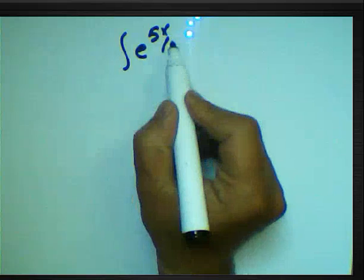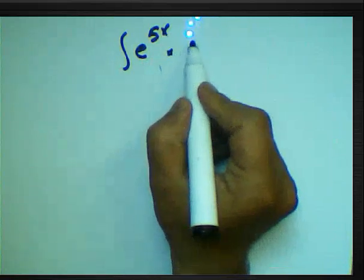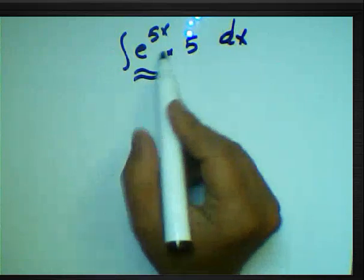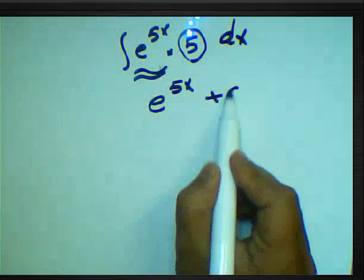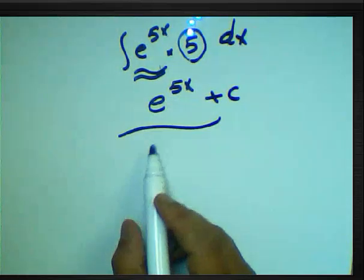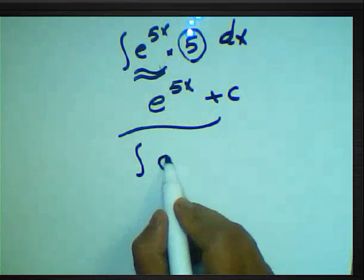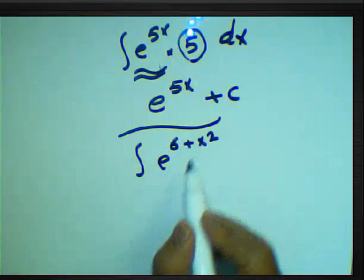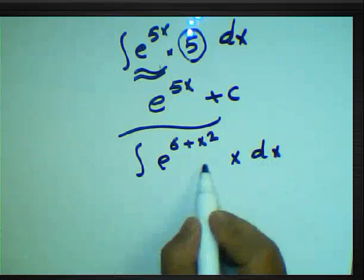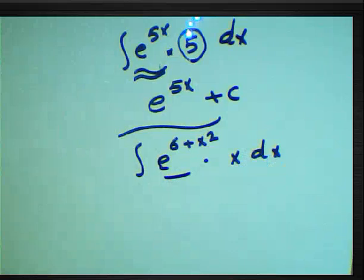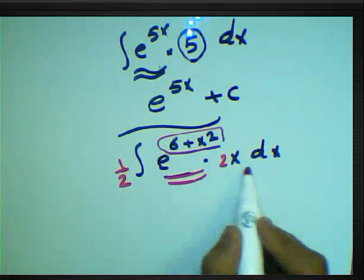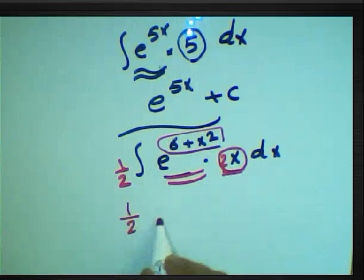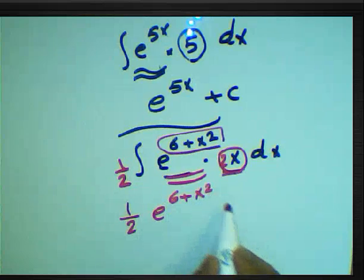What about the integration of e^(5x) times 5 dx? We have the function e^(5x) and its derivative 5 right behind it, so we cancel the derivative and write only the function: e^(5x) plus constant. What about the integration of e^(6+x²) times 2x dx? We have the function e^(6+x²) and the derivative of (6+x²) is 2x, so multiplying by 2 and dividing by 2 confirms this. The result is e^(6+x²) plus constant.